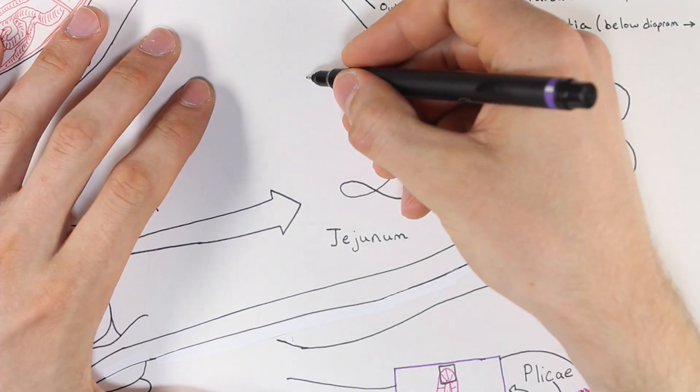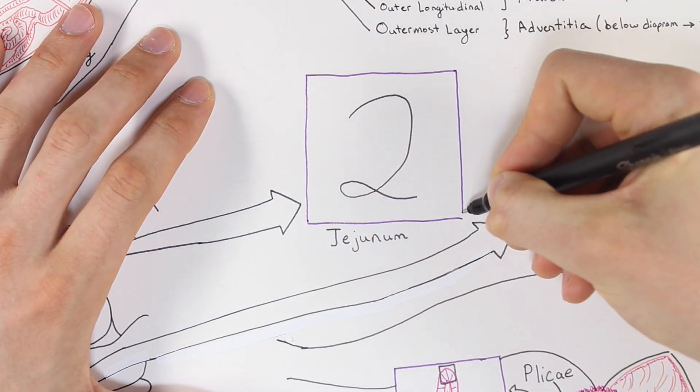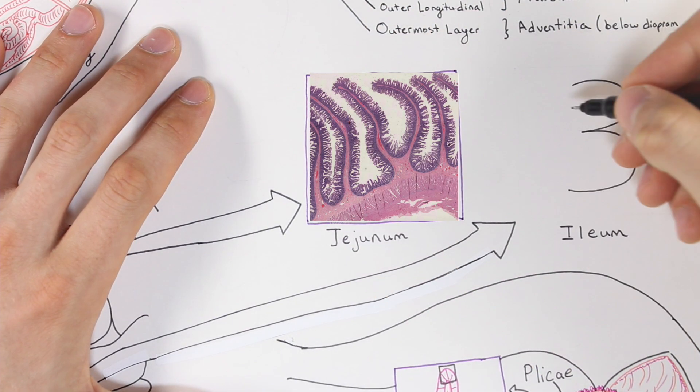The jejunum is the next section and has a fairly nonspecific submucosa. It is known for its relatively boring submucosa. You can see the plicae and villi clearly in this section.